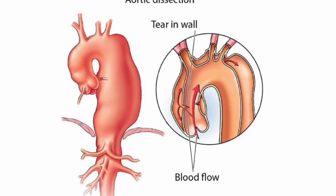This figure of the aorta shows blood flow entering through a tear in the wall into the space that is between the tunica media and the tunica intima.